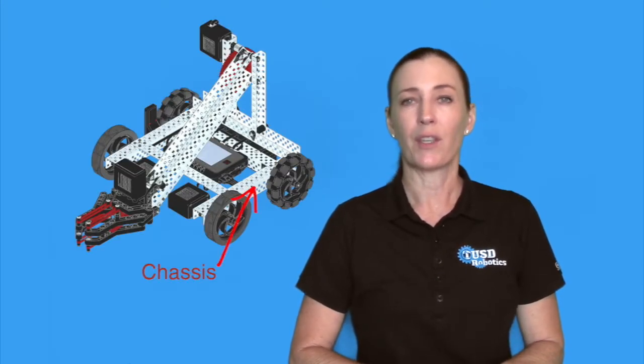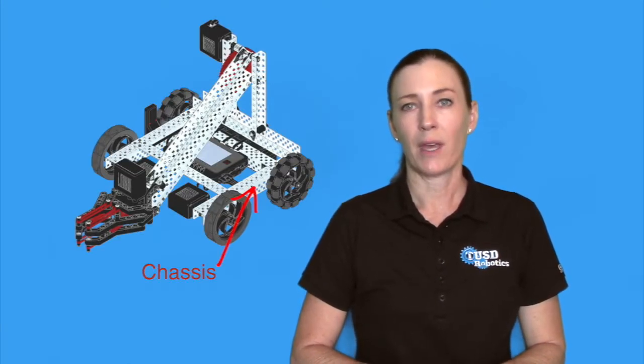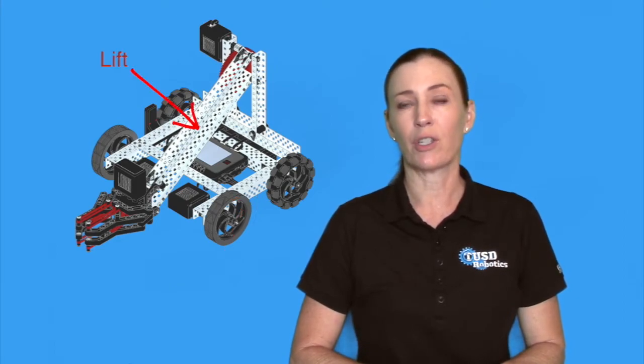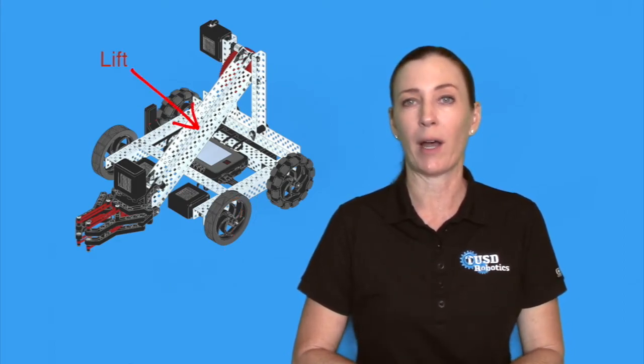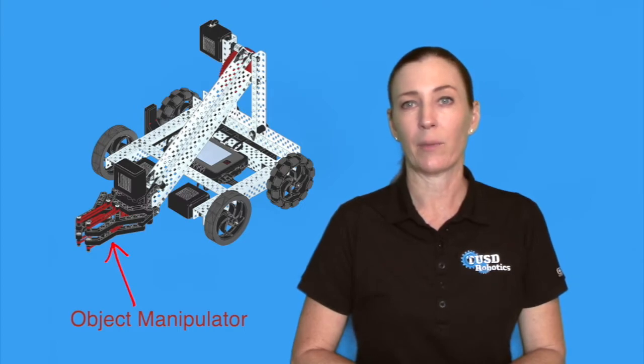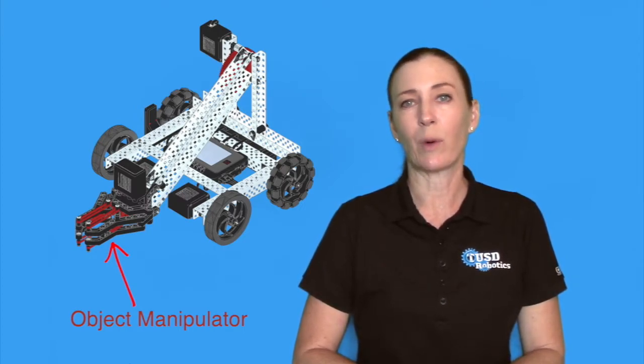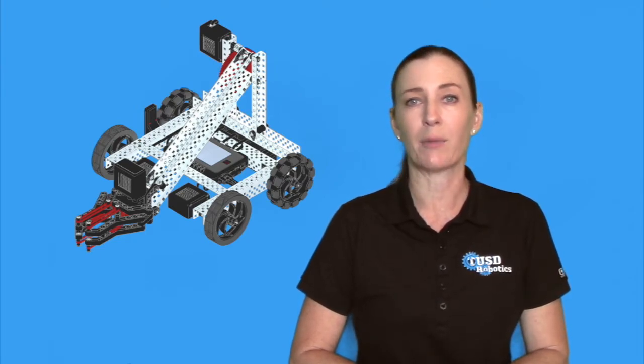Every robot can be divided into three subsystems. The chassis, which is the bottom, the lift or the intake, which is generally the main body of the robot, and then the object manipulator. The object manipulator is what actually manipulates the game field elements, or moves the objects on the field.